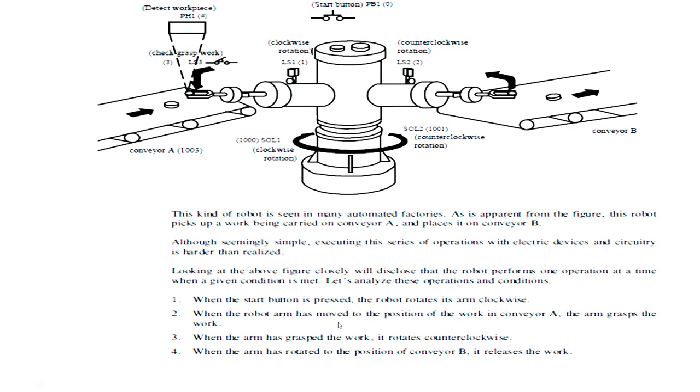When the robot arm has moved to the position of conveyor A, arm will grabs the work. When the arm has grabbed the work or grabbed the work piece, then it will start rotating counter clockwise direction. How long it will be rotating counter clockwise direction?